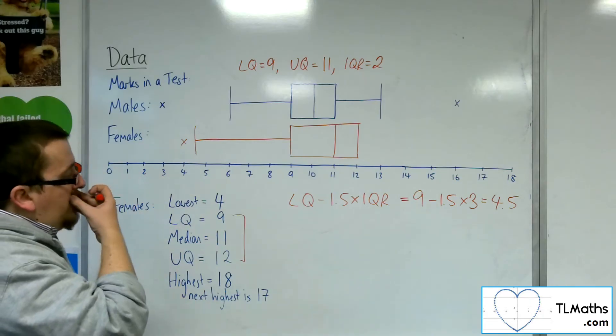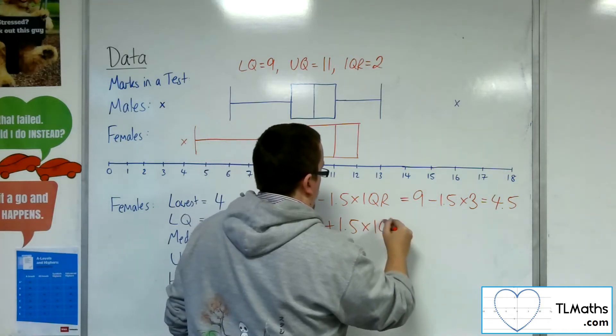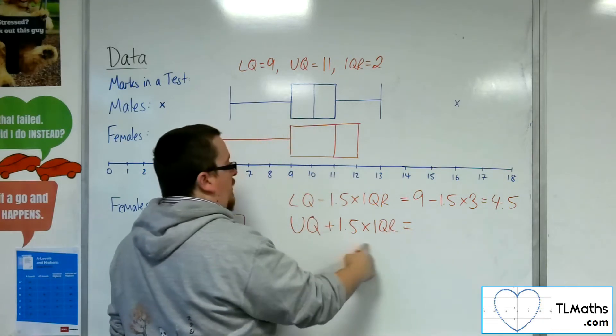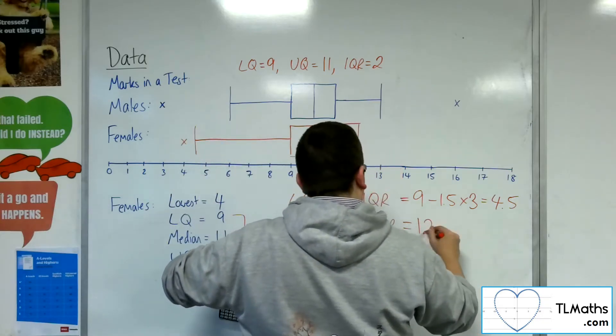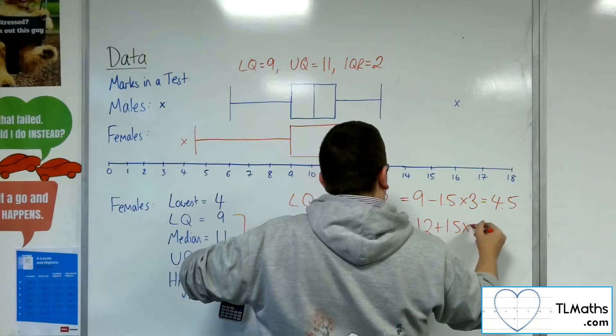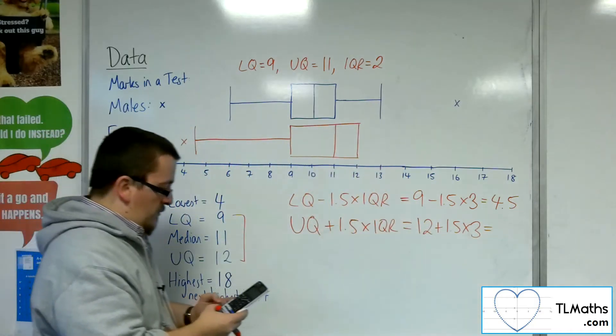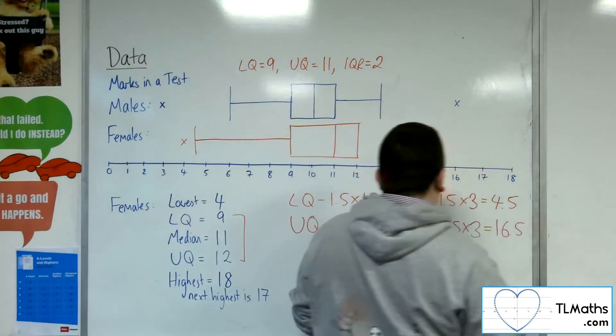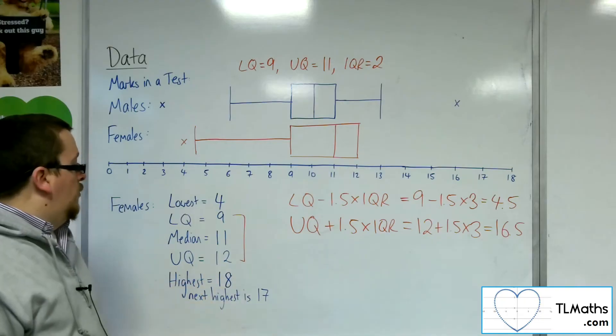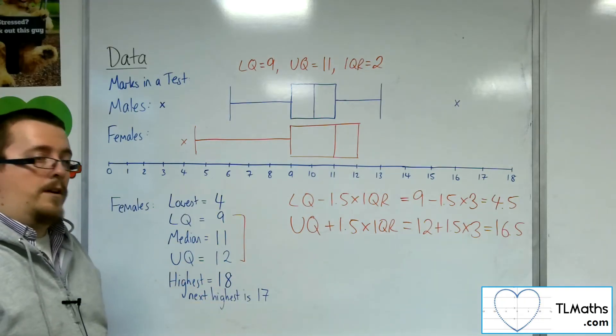So what next? Let's have a look at the upper quartile. So upper quartile plus 1.5 times the interquartile range is 12 plus 1.5 times 3. So 12 plus 1.5 times 3 is 16.5. So I've been told that the highest value is 18, and the next highest is 17.